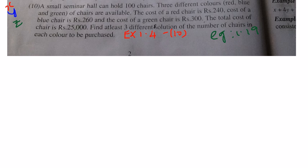The very first line will give us the first equation. The number of red chairs, number of blue chairs, and number of green chairs is equal to 100, that is the total number of chairs. So the number of red chairs, blue chairs, and green chairs, the total number is 100.